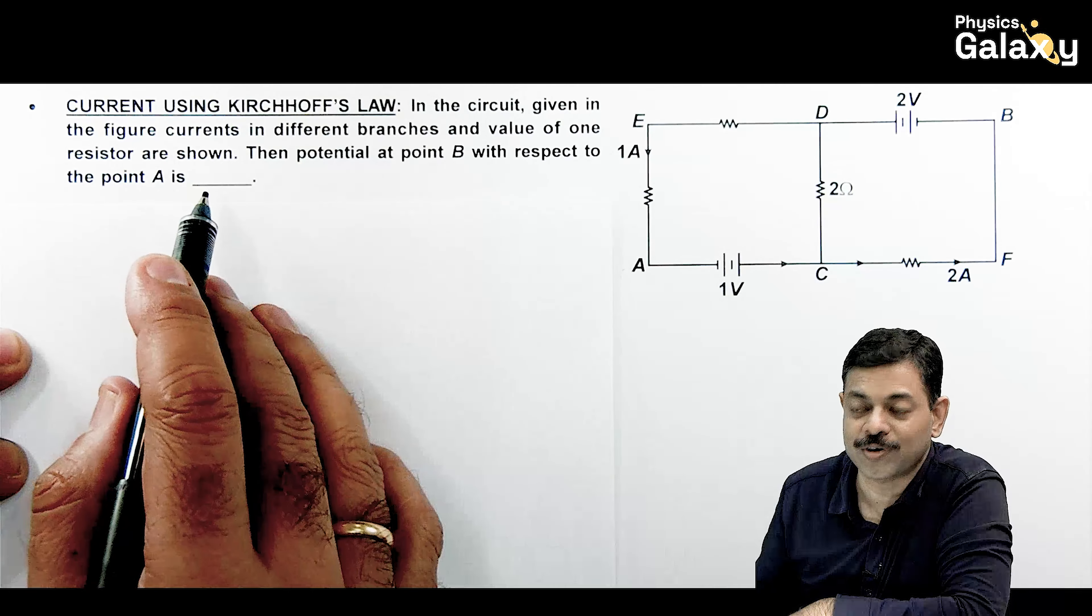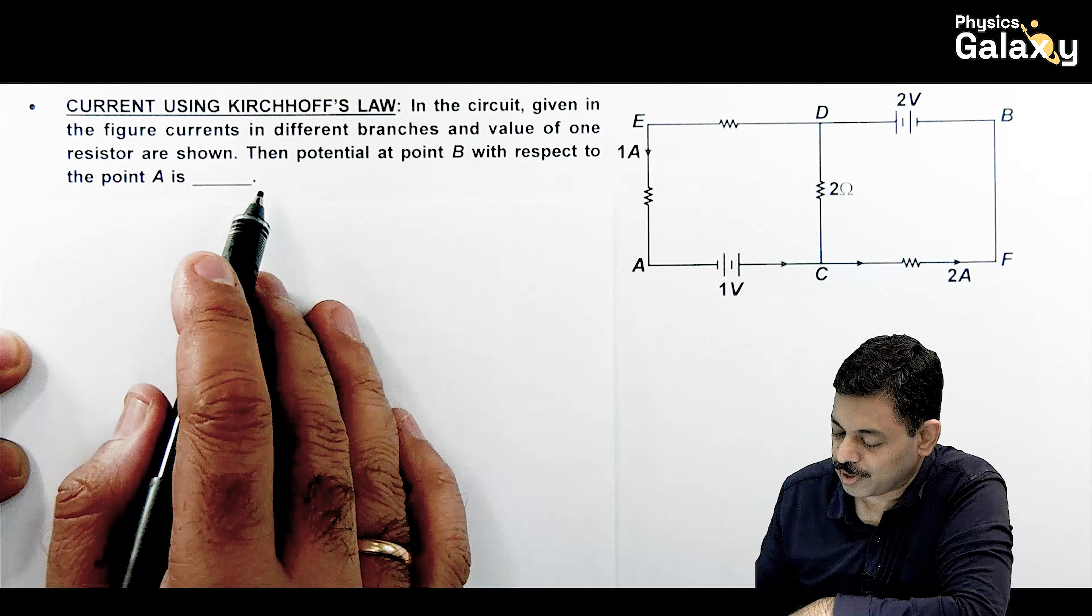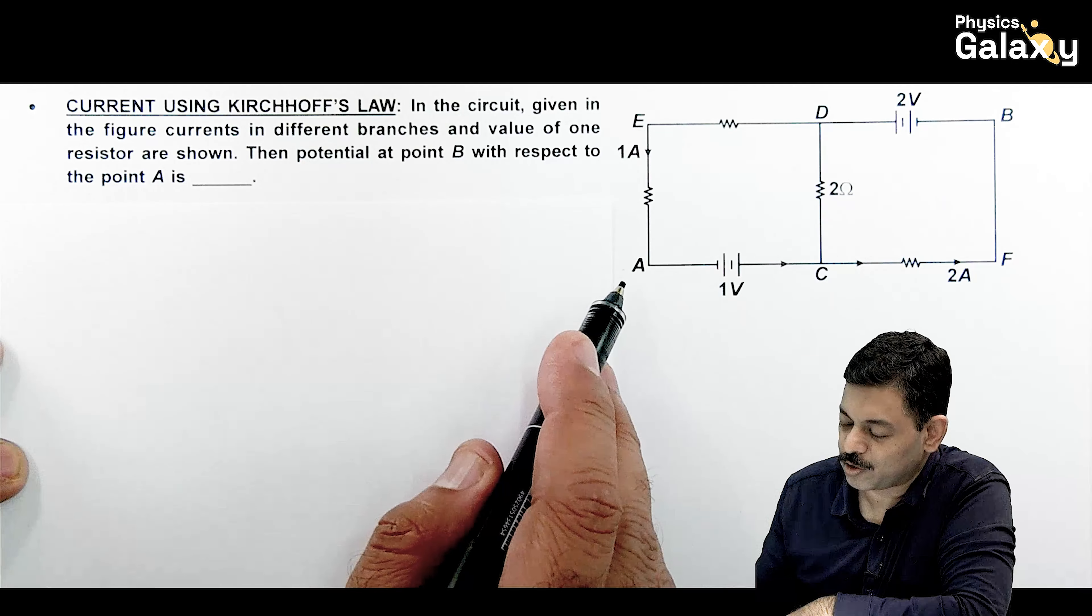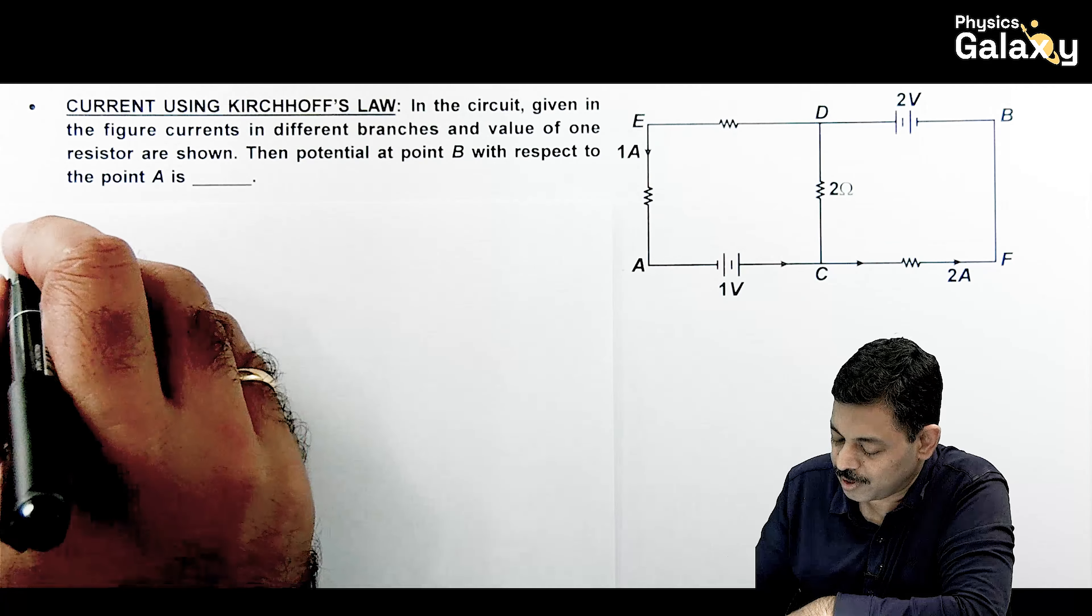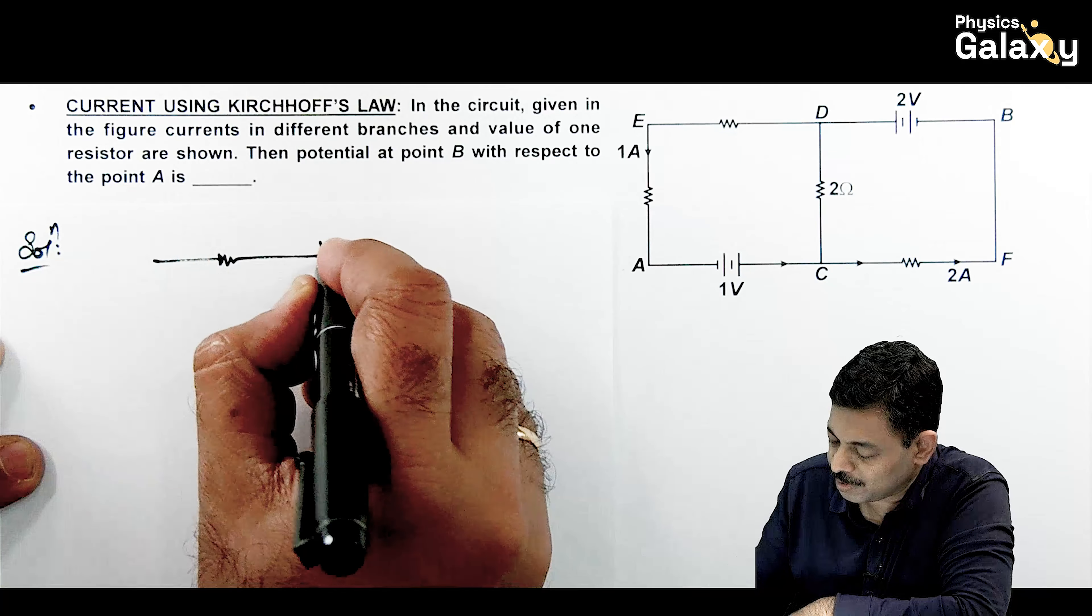Here we are going to analyze current using Kirchhoff's law. The question says in the circuit given in the figure, currents in different branches and value of one resistance is shown. Only 2 ohm resistance is given. It is asking the potential at point B with respect to point A.